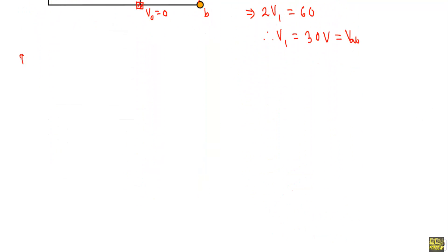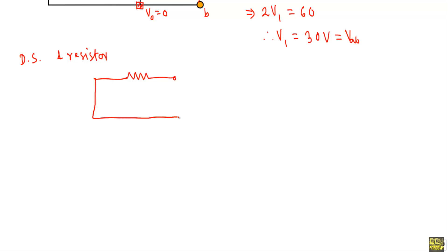Since the given network contains only a dependent source and resistors, the equivalent Thevenin circuit will be only this single resistor Rth. I have calculated Rth equal to 30 ohms using the test source method. This is the Thevenin circuit of the given network.